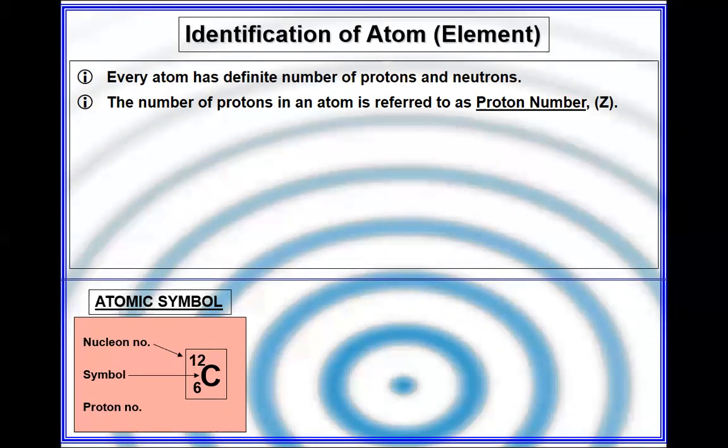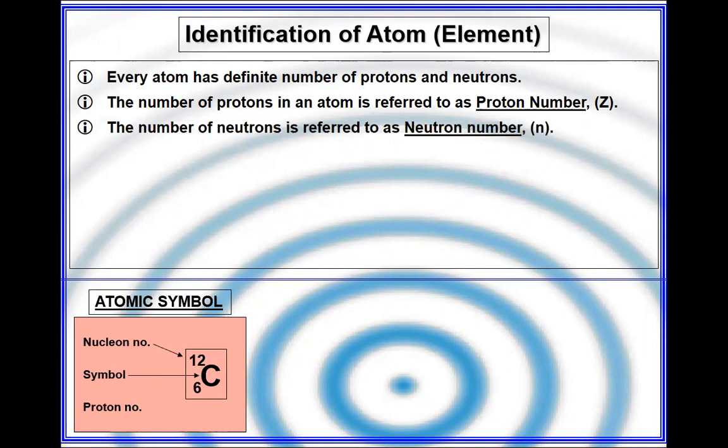The small number is always the proton number. Proton and neutron combine together to form the nucleon number or atomic mass, which is the same.